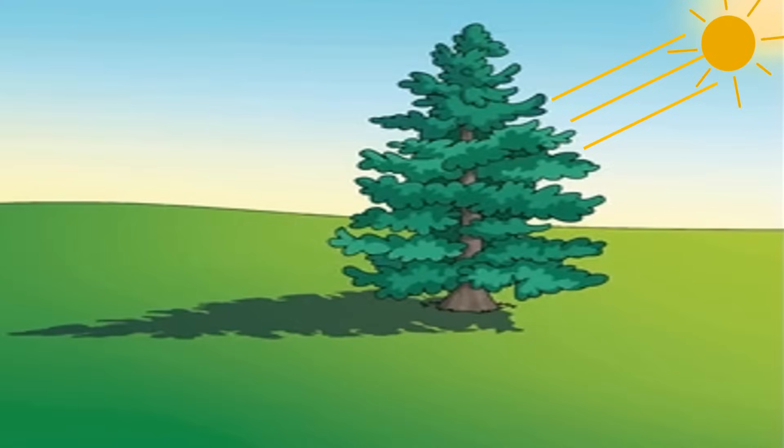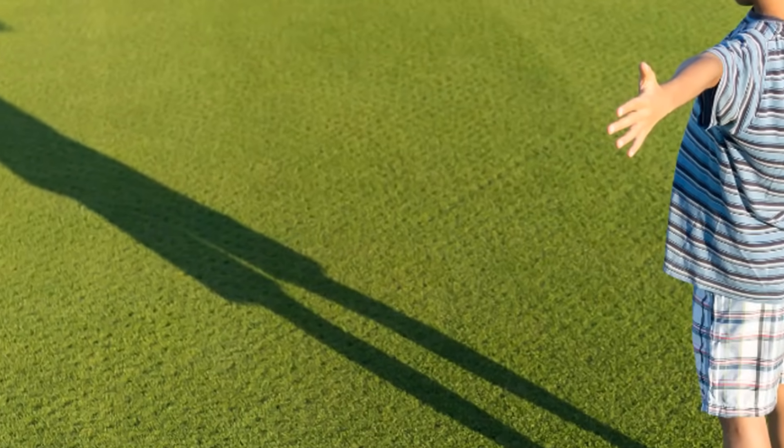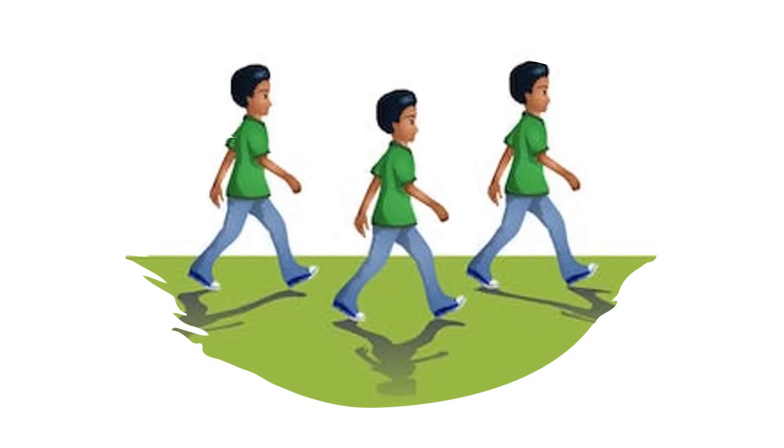A shadow is always formed on the opposite side of the light. When we block sunlight, the shadow of our body is formed. When we move, our shadow moves along with us.